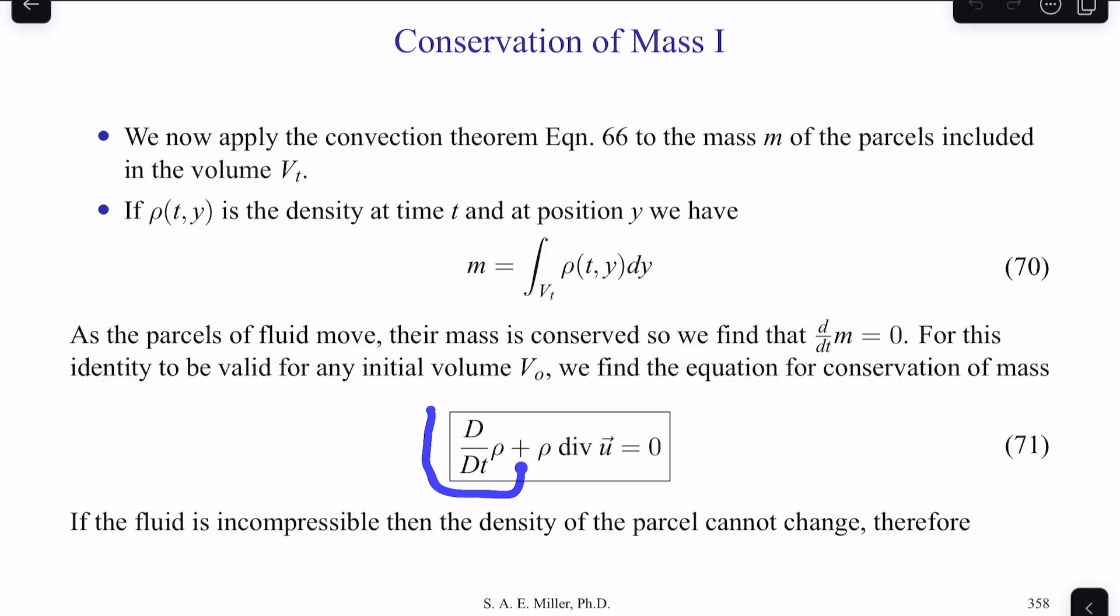So we'll have the material derivative of rho plus rho times the divergence of the velocity vector u will be 0. And we box this equation because, of course, it's for a compressible fluid.